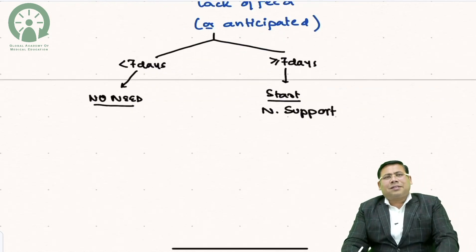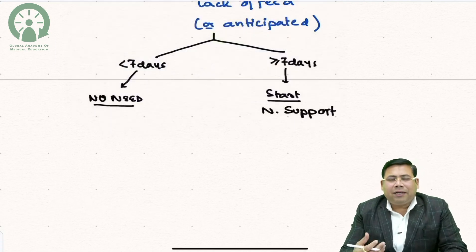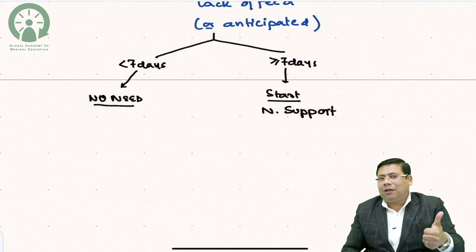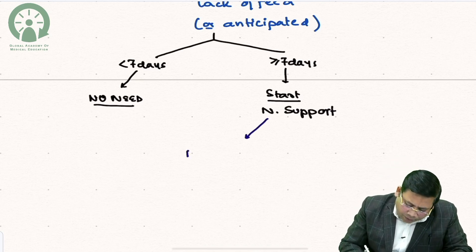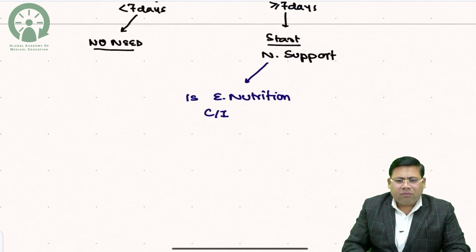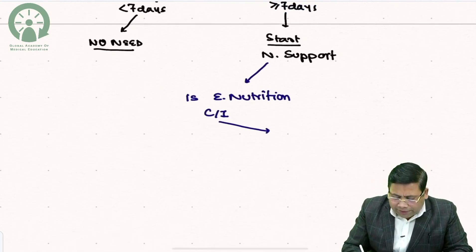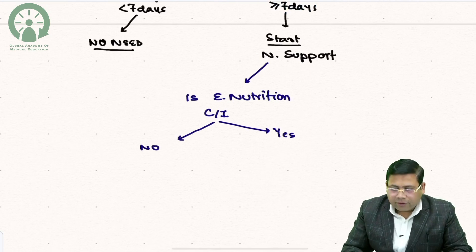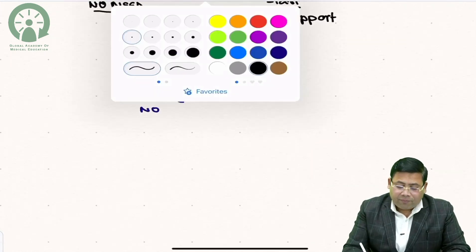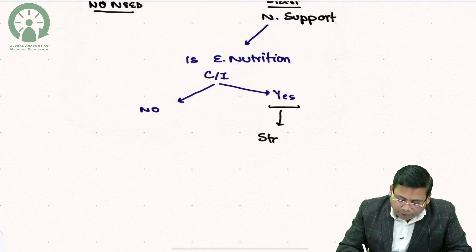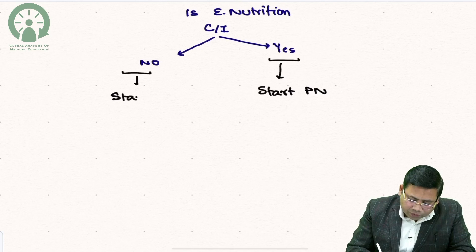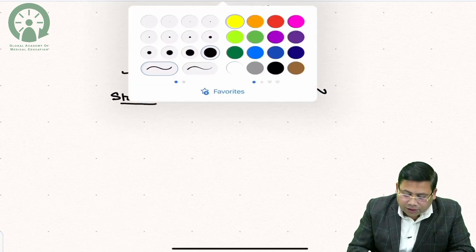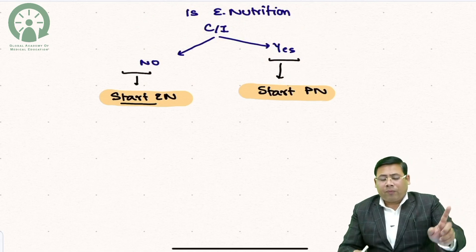Once you decide to start nutritional support, apply the rule of thumb: enteral nutrition is preferred unless contraindicated. Ask whether enteral nutrition is contraindicated. If yes, start parenteral nutrition. If no, start enteral nutrition.